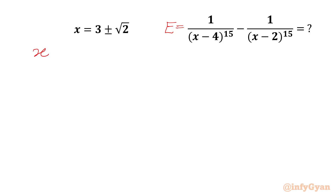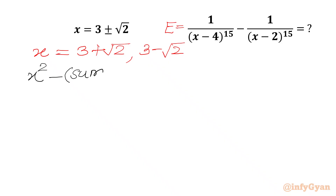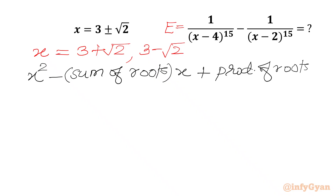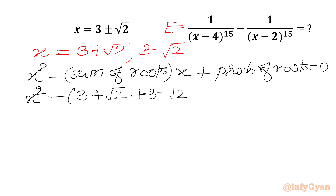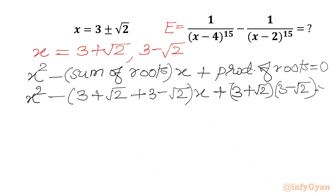Let's get started by writing our roots or x values as 3 plus root 2 and 3 minus root 2. Now we can frame one quadratic equation whose roots are 3 plus root 2 and 3 minus root 2. We can write our quadratic equation as x squared minus (sum of roots) times x plus (product of roots) equal to 0. So we write x squared minus (3 plus root 2 plus 3 minus root 2) times x plus (3 plus root 2)(3 minus root 2) equal to 0.